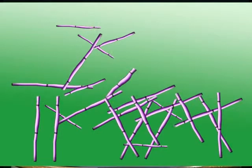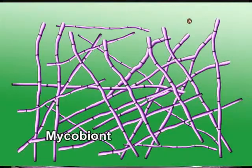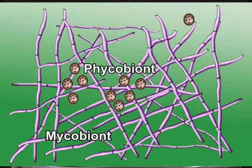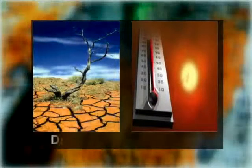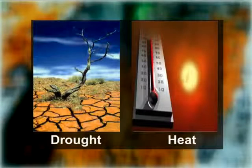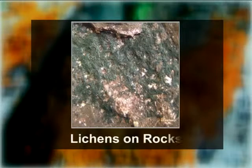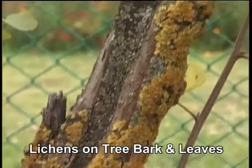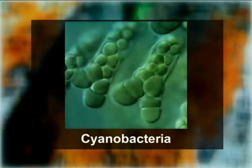The fungal component, also called the mycobiont, provides the structural covering that protects the algal component — also called the phycobiont — from unfavorable conditions like drought, heat, etc. The fungus also traps moisture in the atmosphere and anchors the lichen to a rock, tree bark, leaves, etc. The alga prepares organic food by the process of photosynthesis. If the algal component is a cyanobacterium (blue-green algae), it fixes atmospheric nitrogen in addition to the preparation of food.